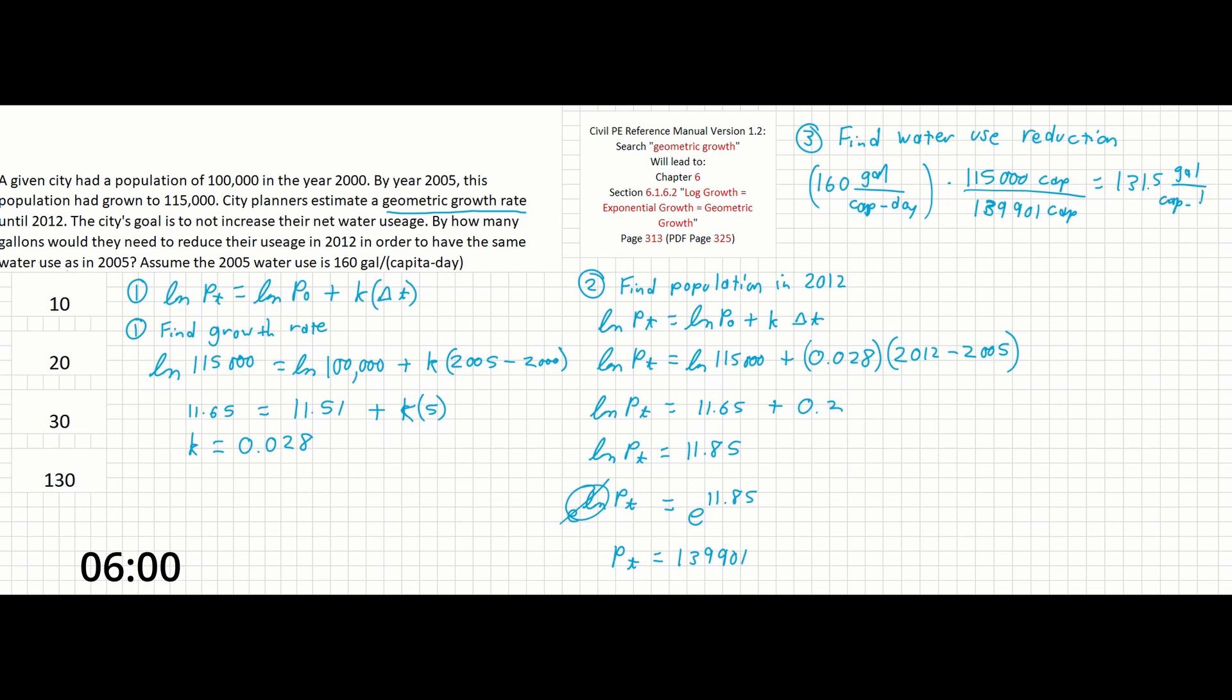But the question asks us by how many gallons would they need to reduce their usage? So instead of falling for this trick over here, we simply subtract the number we calculated here from 160. And we'll get 28.5 gallons per capita day, which our closest answer over here is 30. And that's all it takes to solve this problem.